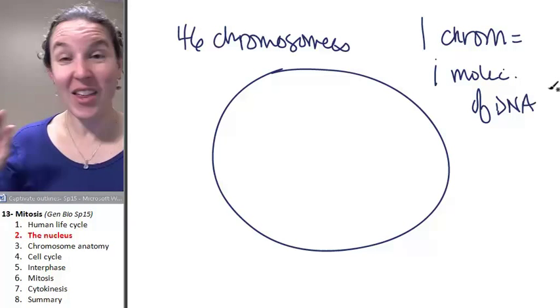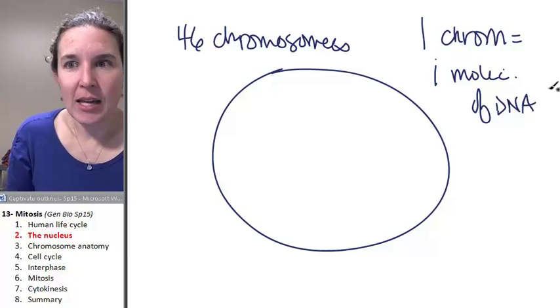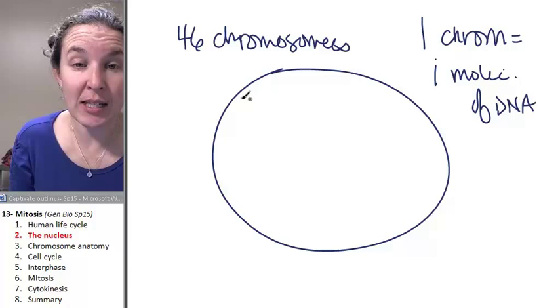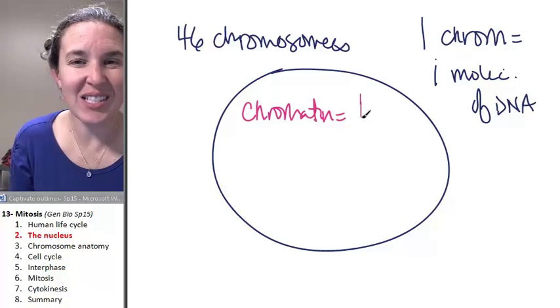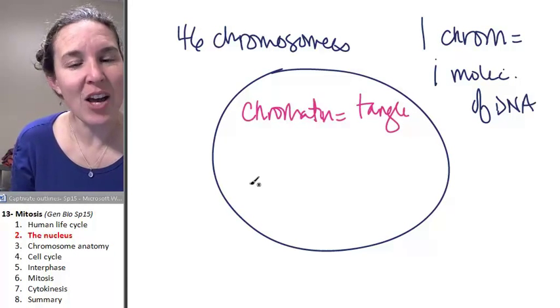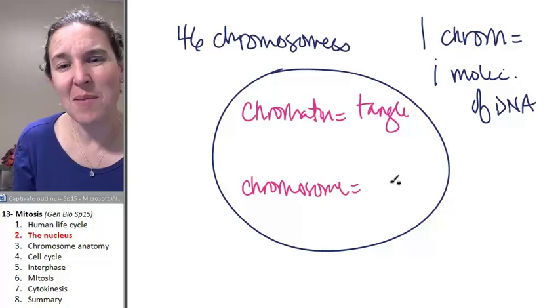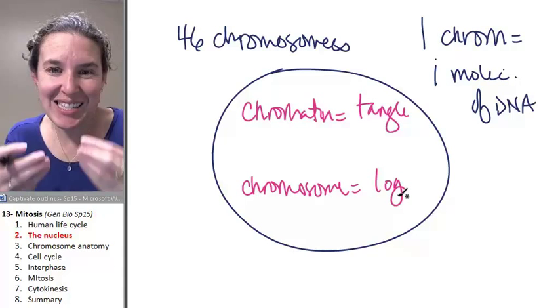So that's cool because why would we have DNA in two different forms? We can have chromatin, which is just a tangle, or we can have what we call a chromosome, but I'm just going to call it a log.